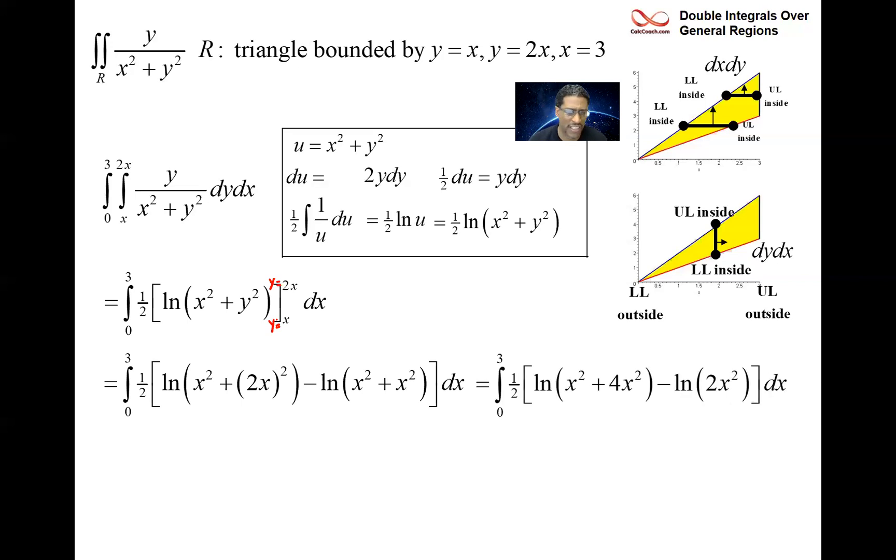The half is going to just keep the half outside, and we can employ a property of logs that will simplify things. The log of a minus the log of b is the log of a over b. When I say log, I mean natural log. We have then the natural log of 5x squared over 2x squared, and magic happens—the x squares cancel out. It's a constant, the natural log of five halves with a half on it.